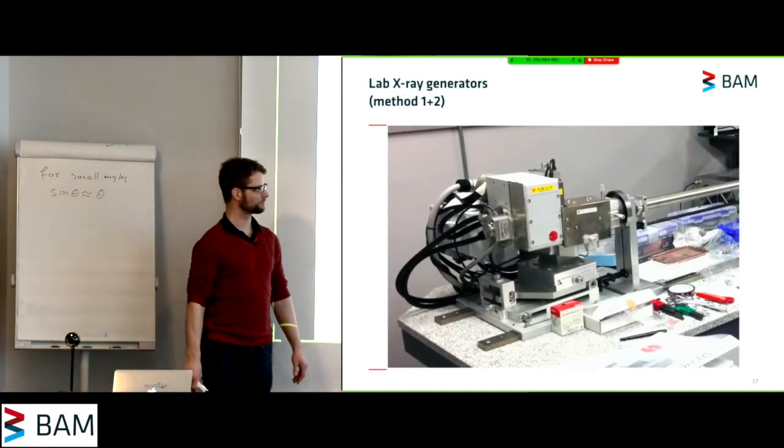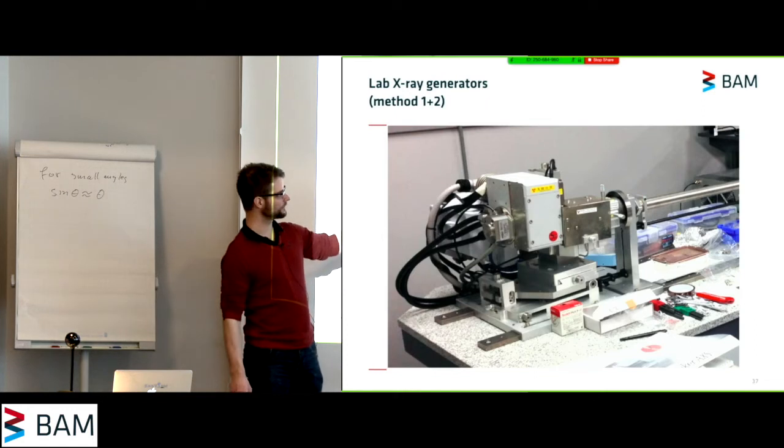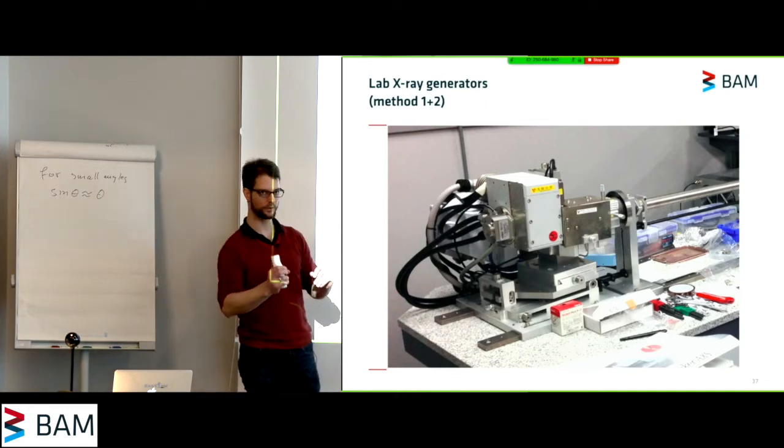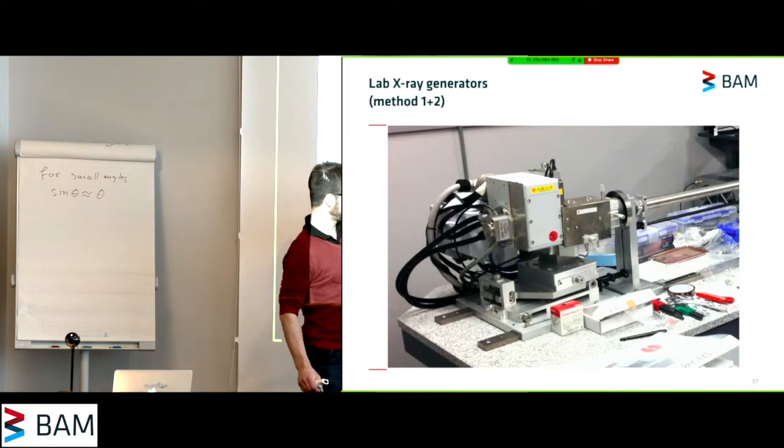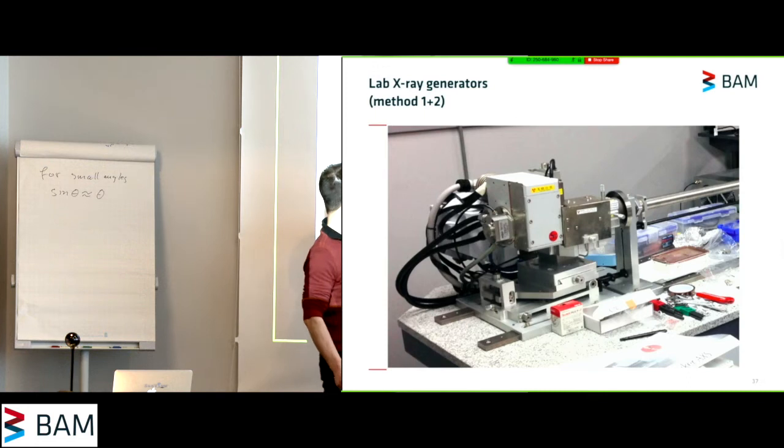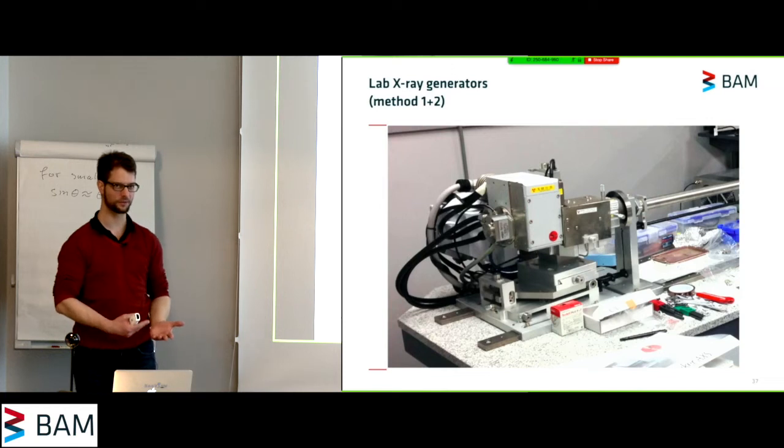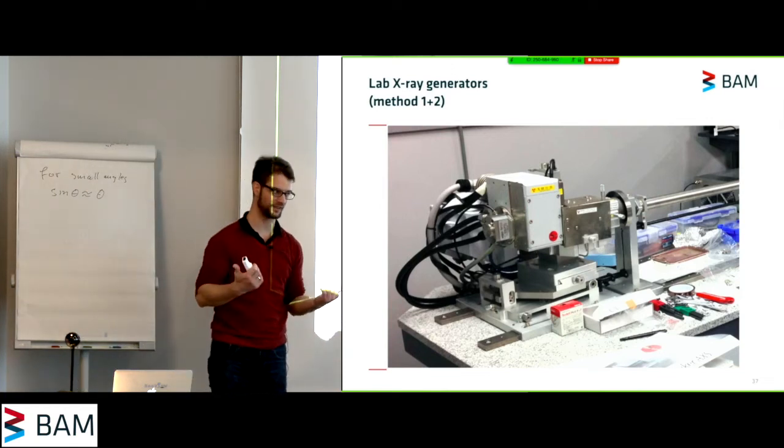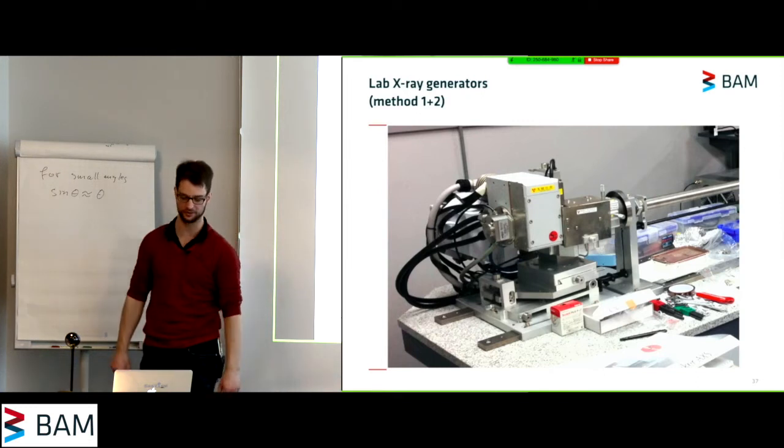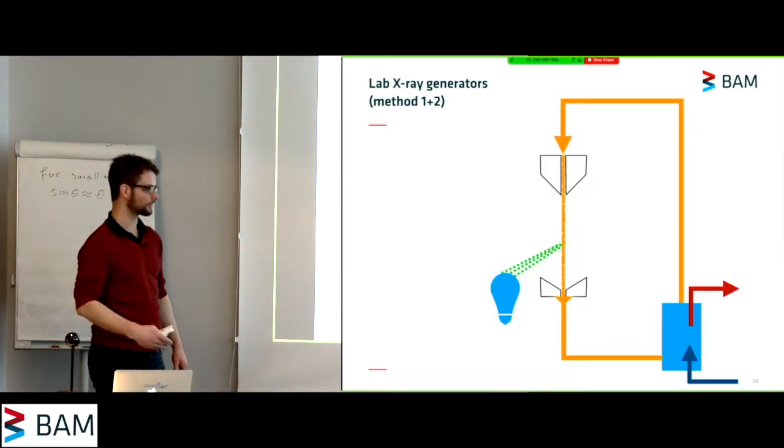One of these rotating anode generators is pictured here. This is a Bruker example. You can change between point focus and line focus by rotating, by putting your whole target assembly either vertically or horizontally. So on these rotating anode generators, you usually only have two exits, which are either point exits or line exits, depending on how your target is oriented.